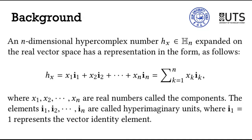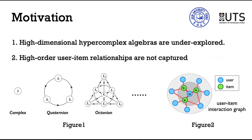An n-dimensional hypercomplex number has a representation in the following form. Here, x are real numbers called components, and elements i are called hyperimaginary units. Recently, researchers proposed diverse hypercomplex recommenders, which boost the performance.